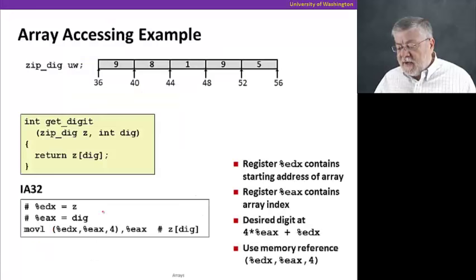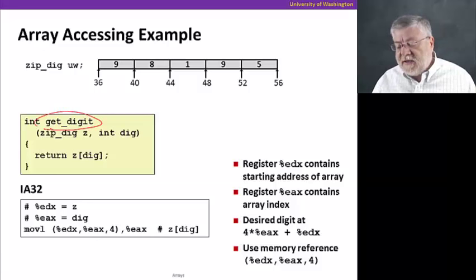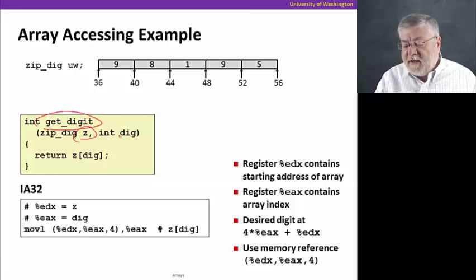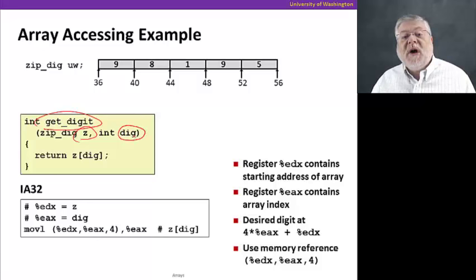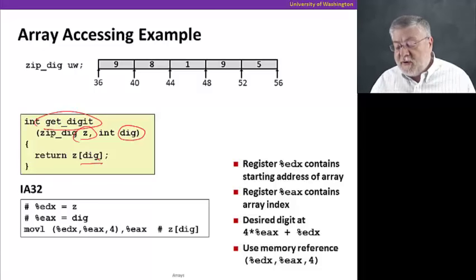Let's take a look at some address computations on this array. Here we have a simple C procedure called getDigit. It takes two arguments, an array and the index of the digit we want in that array. Something like UW three for the third digit of the UW zip code. The way we go about figuring out what that value is, is we just take the name of the array and index it with the other parameter, the other argument, z sub dig.